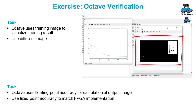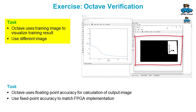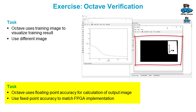You can work with the Octave code to improve verification of the training. Octave uses the training image to visualize the result of the training, and you can use a different image for that. As another task, Octave uses floating point accuracy for its calculations, and you can change this to fixed point to match the FPGA implementation.